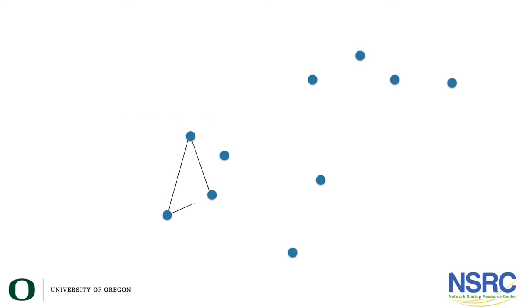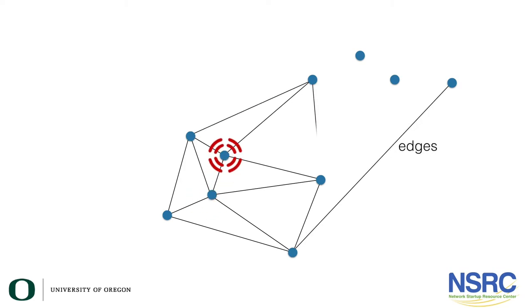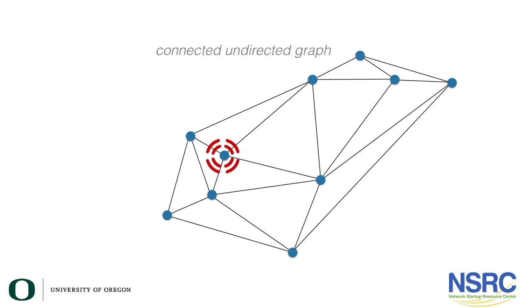After doing that, we can interconnect some of them in different ways using these lines that we shall call edges. Now note that these edges do not have arrows, so in between any two points you can move in either direction.